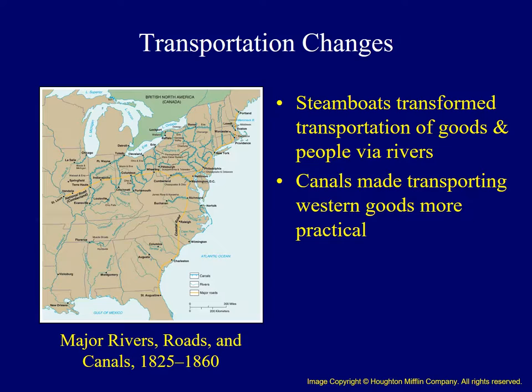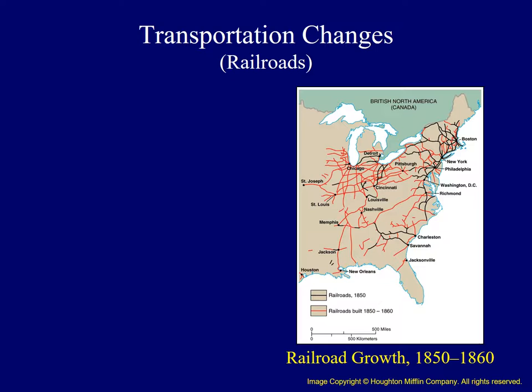By the 1830s, investment in railroad construction outpaced that of canals, and by 1850 approximately 9,000 miles of track were built. However, most of the railroad lines linked eastern cities to one another. The 1850s saw a boom in railroad construction as finally the Great Lakes were connected by rail to states along the Atlantic coast.